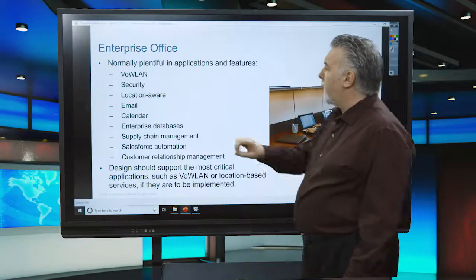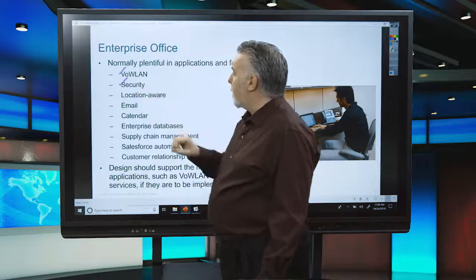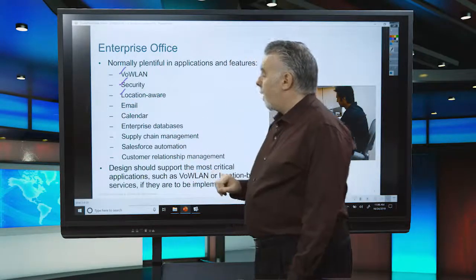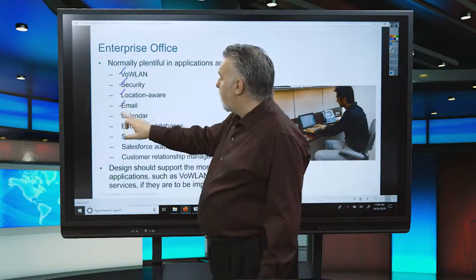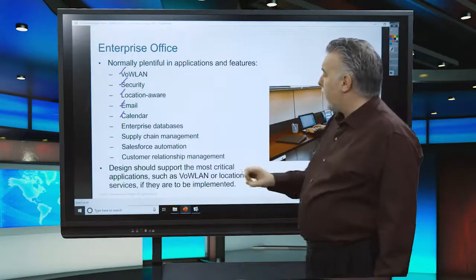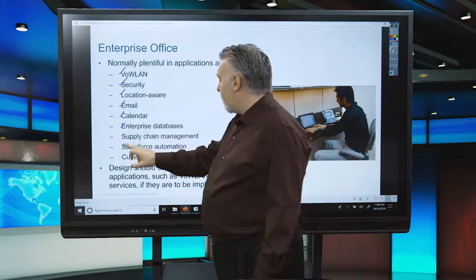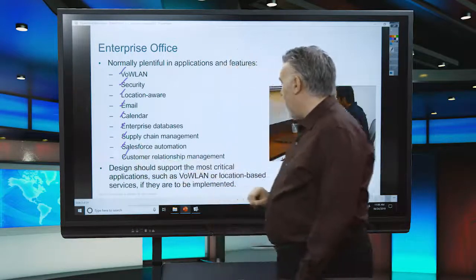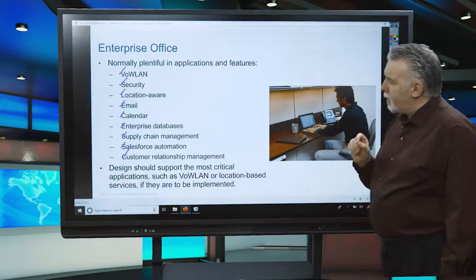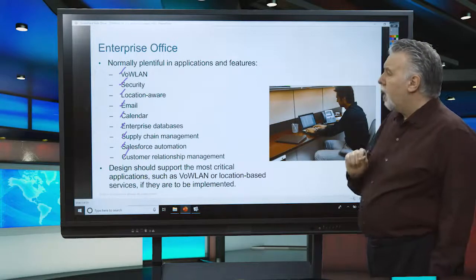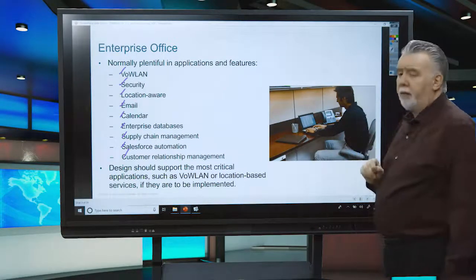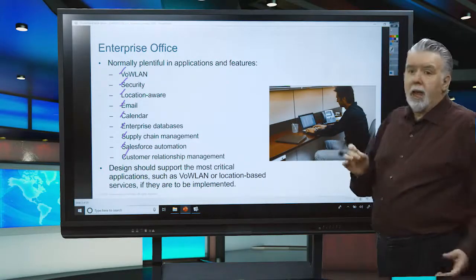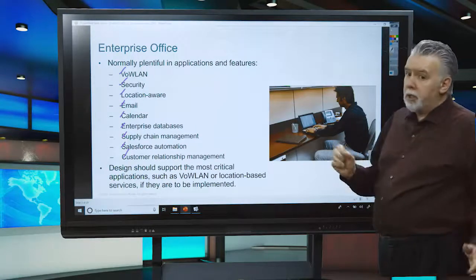The enterprise office may use any of these applications on Wi-Fi. They may use it for voice over wireless LAN, demand security, use it for video camera security, need location awareness, or simply allow customers and users to do emails and calendaring. They may also access enterprise databases, supply chain management, Salesforce automation, or customer relationship management. The design needs to focus on what the customer wants to do with their Wi-Fi network — an enterprise office will differ from a hospital, a K-12 school, or a university.